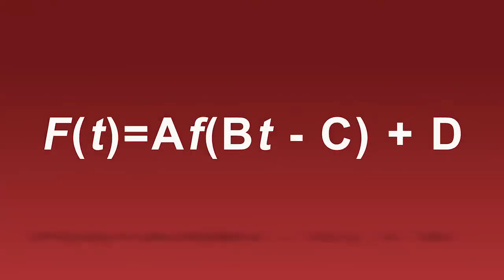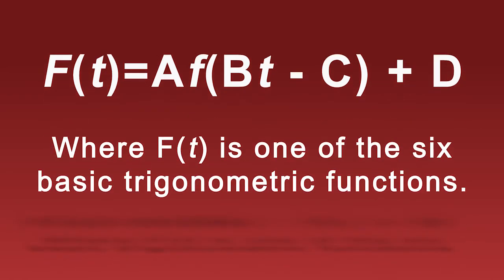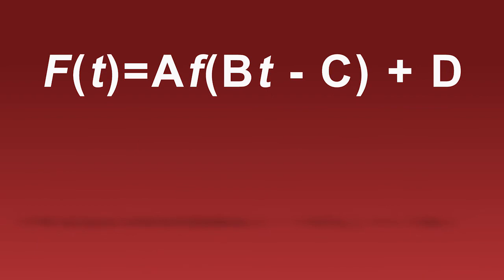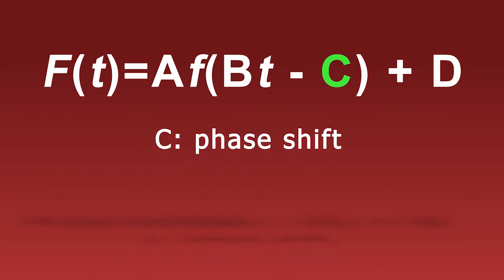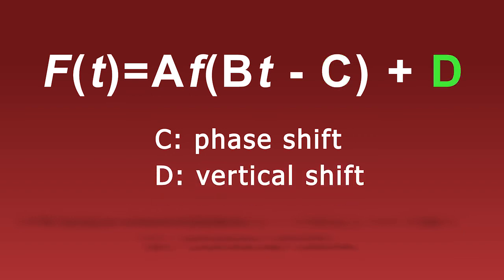Vertical and horizontal shifts of trigonometric functions can be done by placing the function in the correct form. If we place the function in this formula, we can easily shift the 6 basic trig functions horizontally and vertically on a coordinate grid. Use the value of C when B equals 1 to move the graphs left and right. Use the value of D to move the graphs up and down.